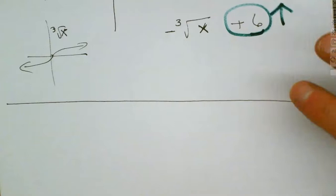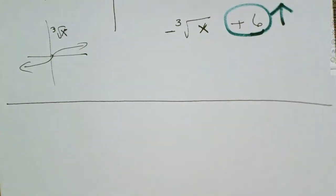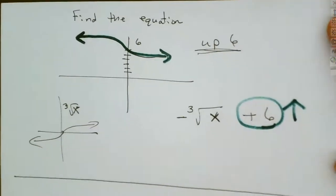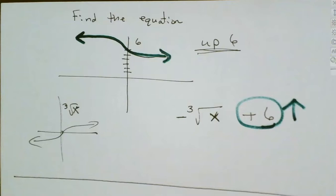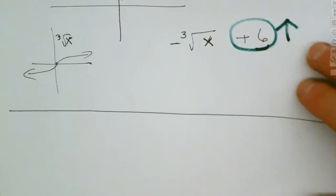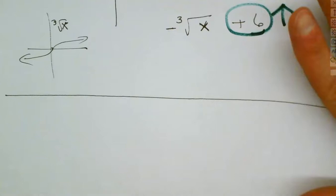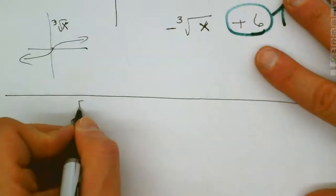The next topic is the greatest integer function, which is a case of stairs — it's not a continuous function. It's graphed the same way as the others. These are also in the back of your textbook.